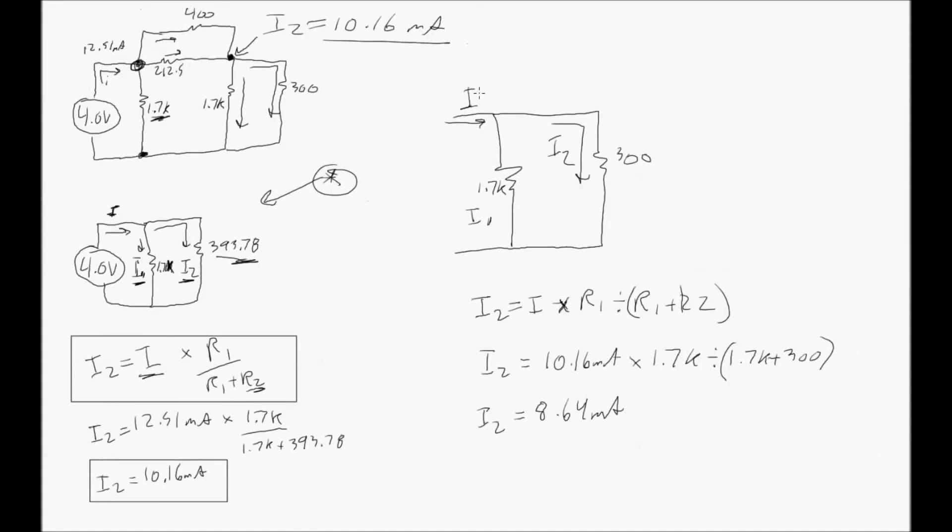you have a new I current here, which is now the 10.16 milliamps. So you can see this part of the circuit here is the same as this part here. This is our second major branch point.